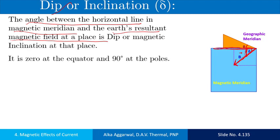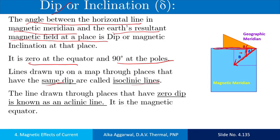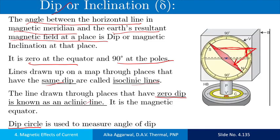The value of magnetic inclination is zero at the equator and 90 degrees at the poles. The lines joining the points of the same value of dip are called isoclinic lines. The lines joining the points of zero dip angle on a map are called aclinic lines. The dip circle is used to measure the angle of dip. It contains a magnet with graduations, free to rotate on a vertical plane, and this angle shown is the angle of dip.